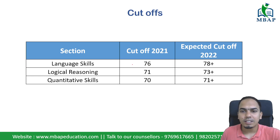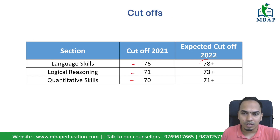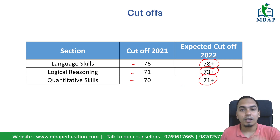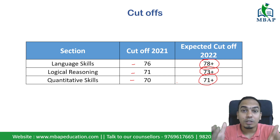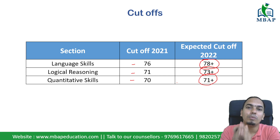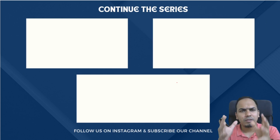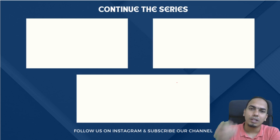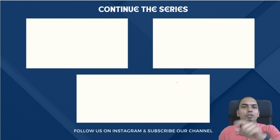Overall, looking at last year's cutoffs — 76 for language, 71, and 70 for other sections — you can expect the language cutoff to increase, the logical reasoning cutoff to increase, and a slight increase in the quant cutoff as well. So overall cutoffs are going up. Make sure you practice with the right materials — we are updating our mocks to reflect these changes. More such detailed videos will be coming on our channel, so make sure you have subscribed. All the best!